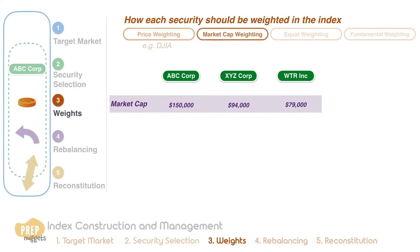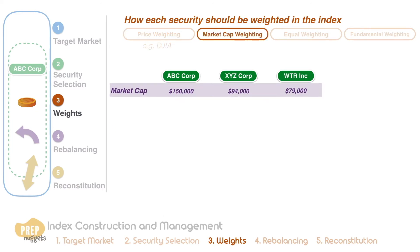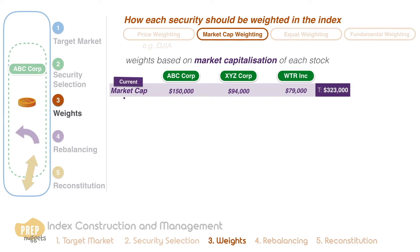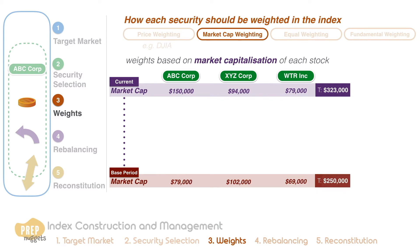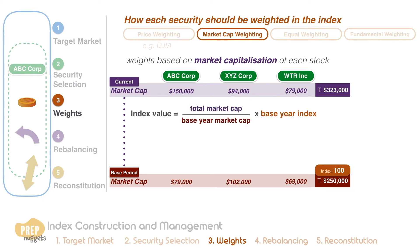A market capitalization weighting scheme does not have such a problem. A market cap-weighted index has weights based on the market cap of each stock as a proportion of the total market cap of all the stocks in the index. The index is calculated by summing the market cap of all the stocks and dividing by a similar sum calculated during the selected base period. The ratio is then multiplied by the index's base value, which is typically 100. For example, if the base year total market cap for this index is $250,000 and the base year index value is 100, applying this formula gives us an index value of 129.2.